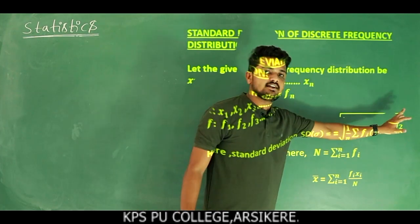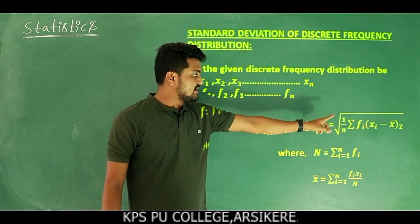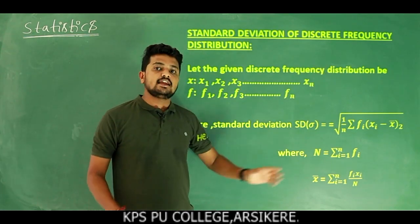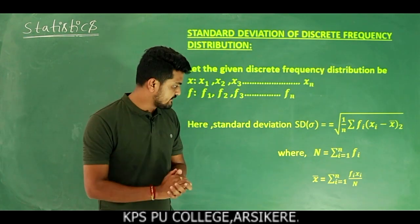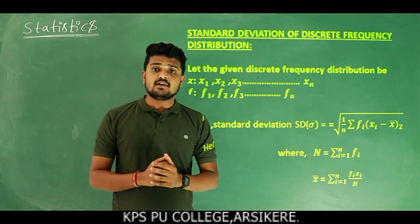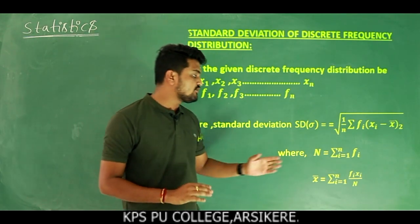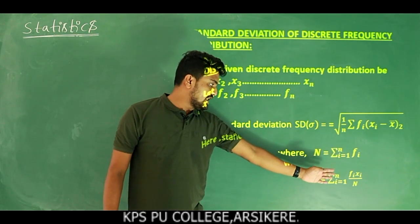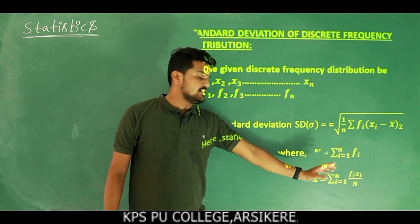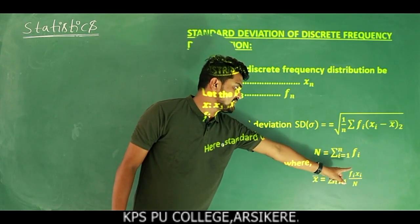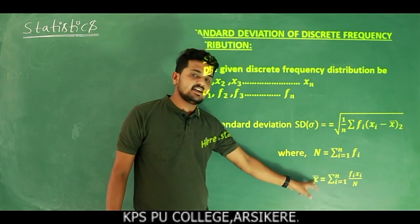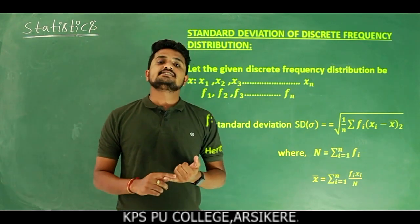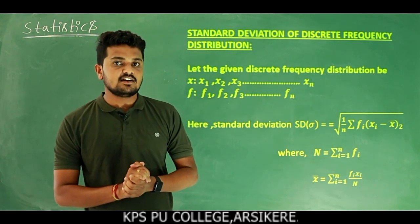So note the formula: variance sigma square equals (1/n) × summation fi × (xi minus x̄) whole square, where n equals the sum of the frequencies. And x̄ is the mean value, found by x̄ = summation(fi × xi) divided by n. This is how we find variance and standard deviation for discrete frequency distribution.